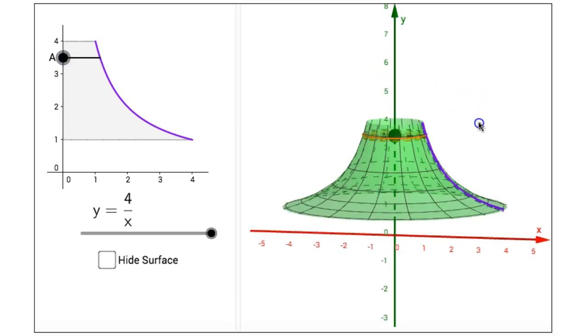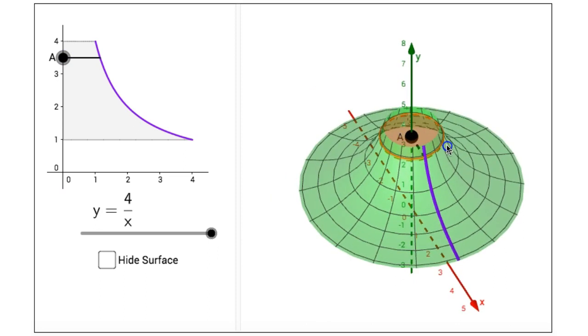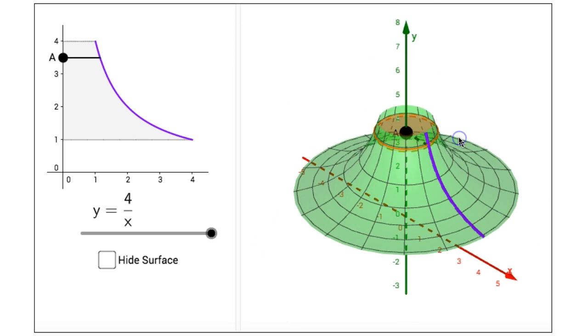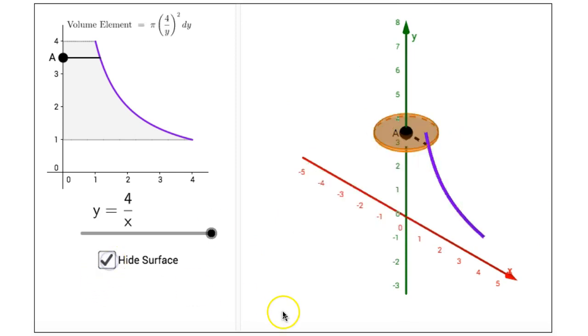We can click on the right hand side and explore the solid formed by dragging and rotating the view. And if I hide the surface we can clearly see the volume element and how it changes its size.